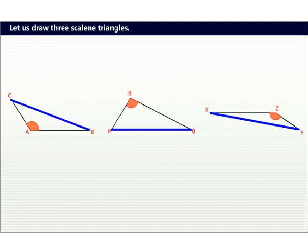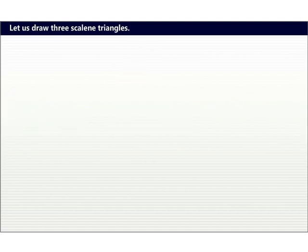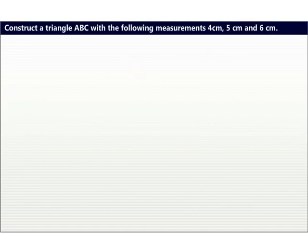We observe that in a triangle, the side opposite to the largest angle is the longest side. Let us now try to construct a triangle ABC